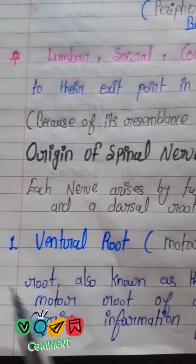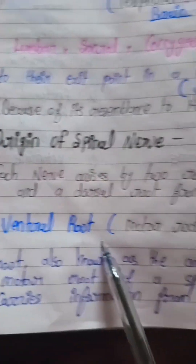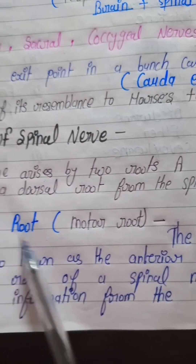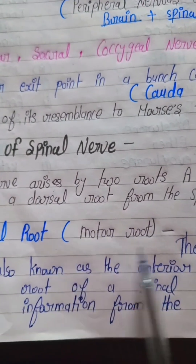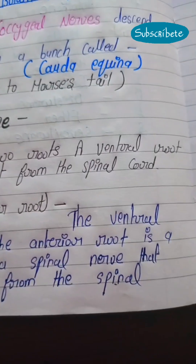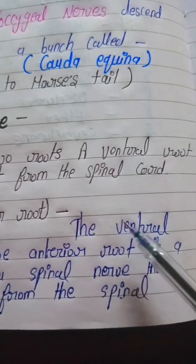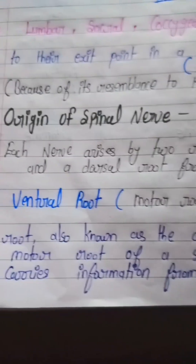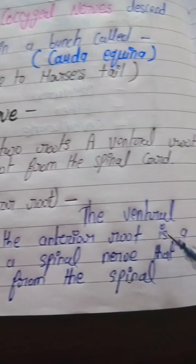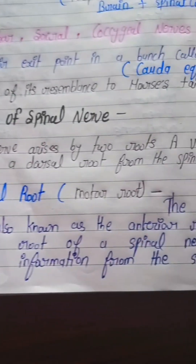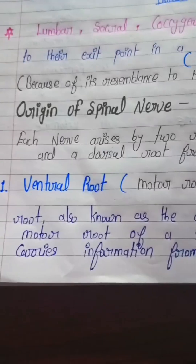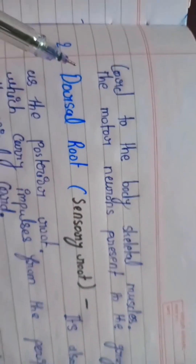First, the ventral root — they are the motor roots, and the nerves function together for each organ. The ventral root is also known as the anterior root, and it is the motor root of the spinal nerve that carries information from the spinal cord to the body's skeletal muscles. The motor neurons are present in the gray matter.